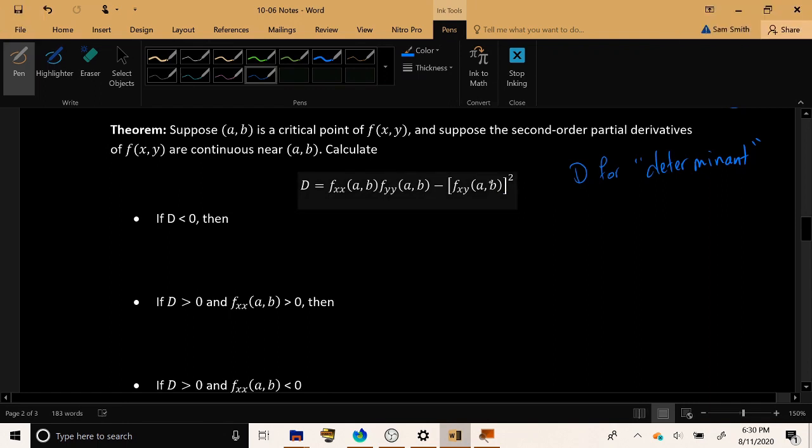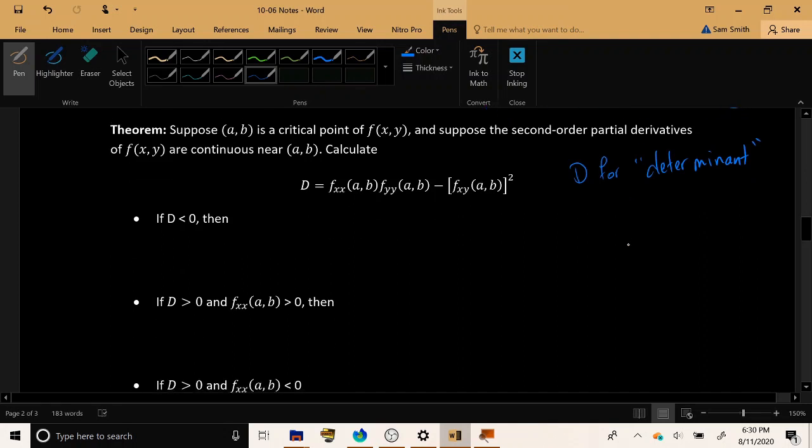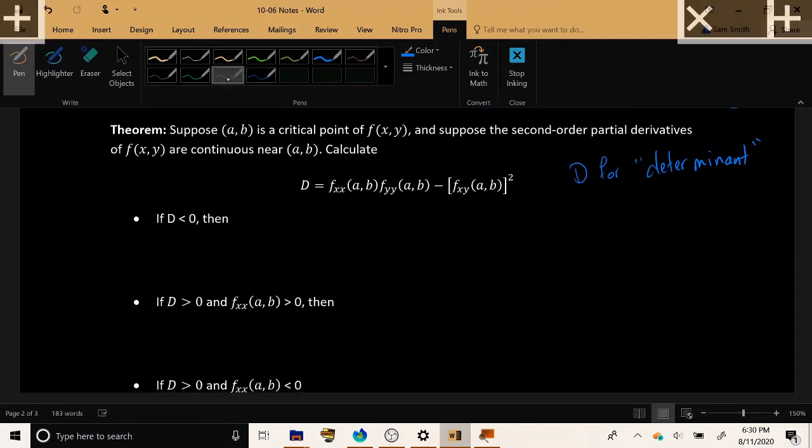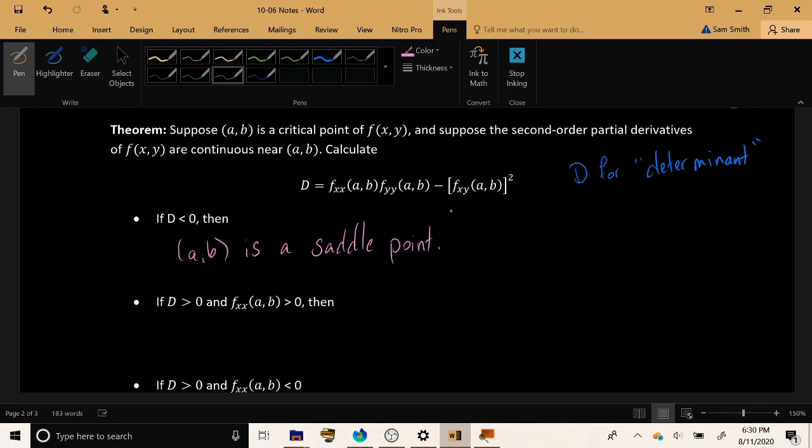You have a couple of different cases. The first possibility is that when you calculate this number D, the result is negative. If you've got a negative number, then that is a sign that (a,b) is a saddle point. Yes, it's a critical point, but it's neither local max nor is it a local minimum, sort of a fusion of the two.